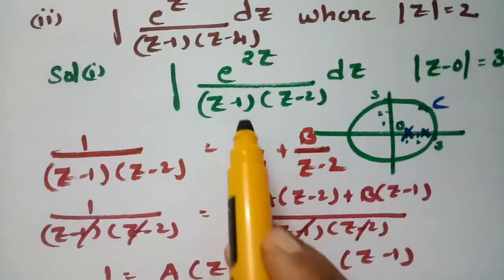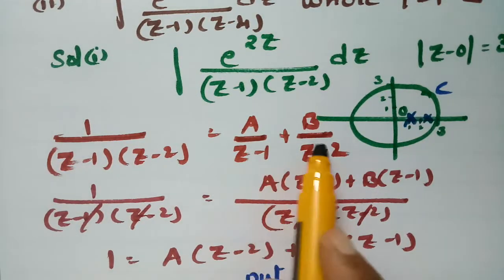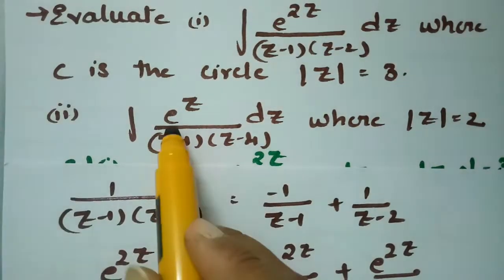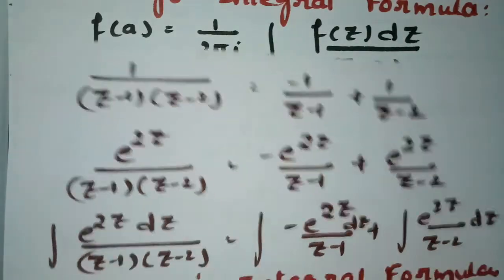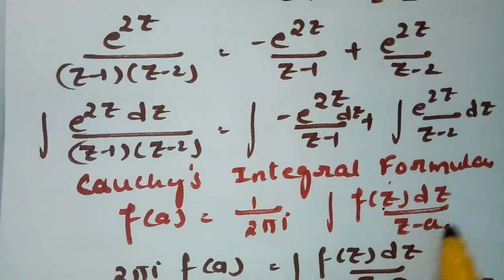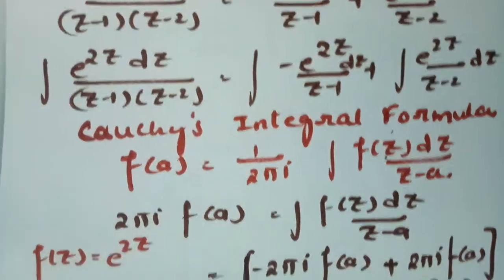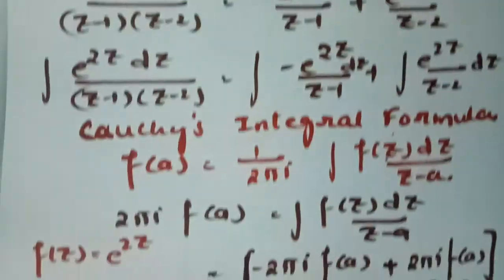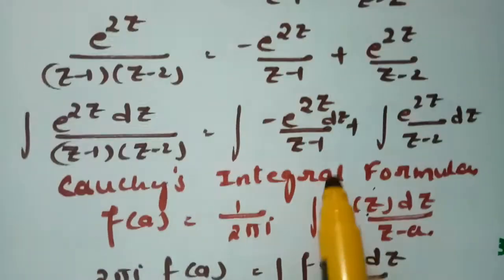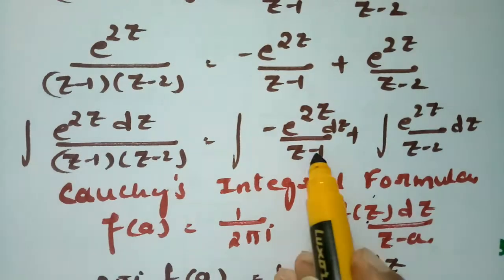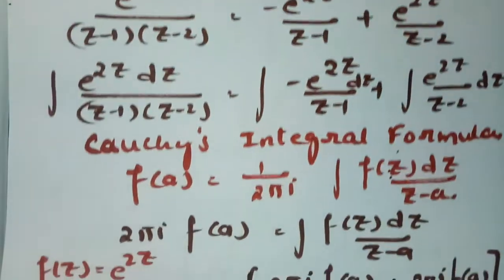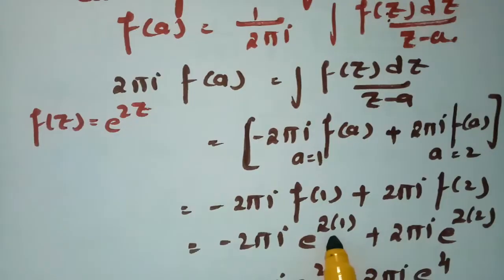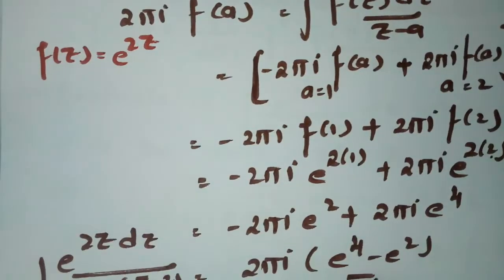It is simple: first resolve the fraction into partial fractions, find a = -1 and b = 1, multiply throughout by e^(2z), then integrate both sides. According to Cauchy's integral formula, send 2πi to the other side: 2πi · f(a) equals the integral. When comparing, a = 1 for the first integral and a = 2 for the second, with f(z) = e^(2z).